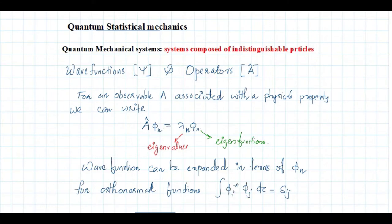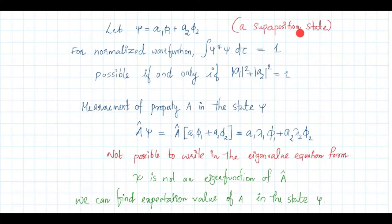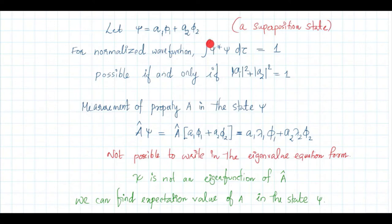That is, the integral of φ_i* φ_j dτ is equal to δ_ij, where the star means complex conjugate. If this condition is satisfied, we say these φ's are orthonormal functions. Now consider a superposition state: ψ = a₁φ₁ + a₂φ₂ — that is, a mixed state. φ₁ and φ₂ are two orthonormal functions, and a₁ and a₂ are some constants. If this wave function is normalized, then the inner product with itself equals 1, giving |a₁|² + |a₂|² = 1.